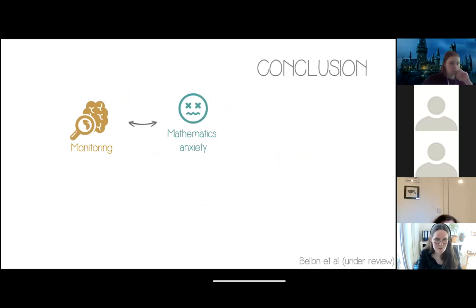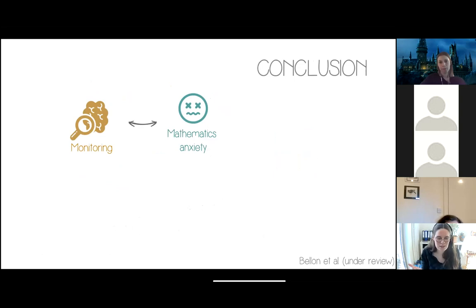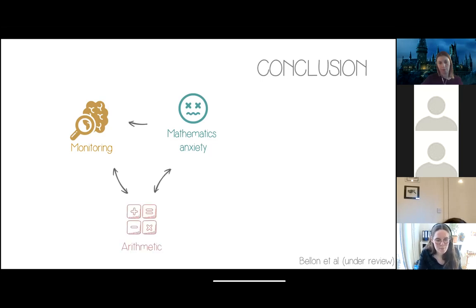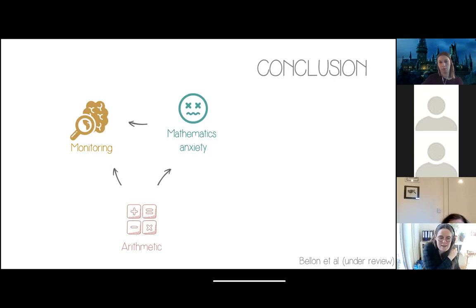To summarize: our results demonstrate that math anxiety and monitoring are indeed correlated concurrently, but also longitudinally, and that the longitudinal association is mostly driven by the predictive value of math anxiety on metacognitive monitoring. When considered simultaneously, monitoring is more important for arithmetic achievement than math anxiety. However, the results clearly indicate that arithmetic achievement itself is an important predictor of both math anxiety and monitoring later in development — emphasizing the importance of skill development for the development of math anxiety, metacognitive monitoring, and their interrelations.